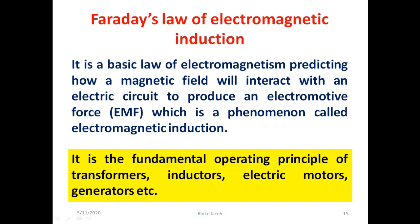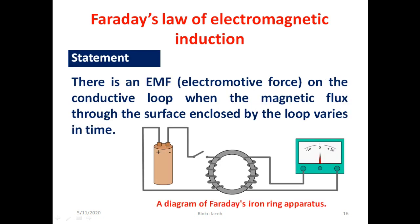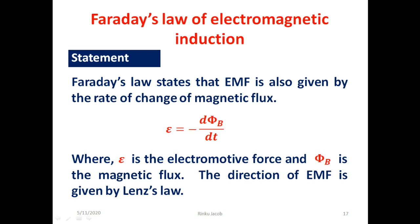Next we discuss about Faraday's law of electromagnetic induction. It is a basic law of electromagnetism predicting how a magnetic field will interact with an electric circuit to produce an electromotive force (EMF), a phenomenon called electromagnetic induction. It is the fundamental operating principle of transformers, inductors, electric motors, generators, etc. The law states that there is an EMF on a conductive loop when the magnetic flux through the surface enclosed by the loop varies in time. The mathematical form is epsilon equal to minus d phi by dt, where epsilon is the EMF and phi is the magnetic flux linked with the conductor. The negative sign indicates the direction of the induced EMF is opposite to the rate of change of magnetic flux, as given by Lenz's law.